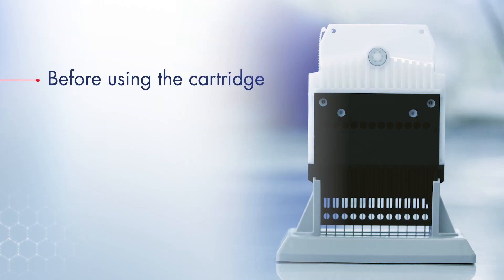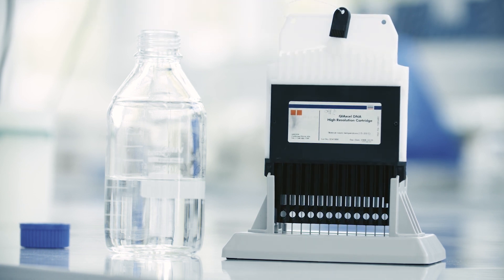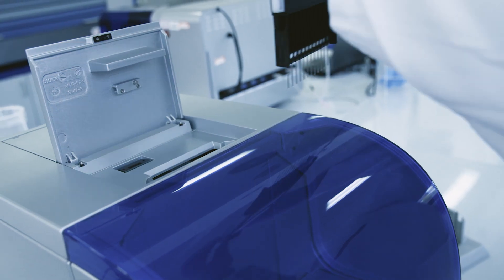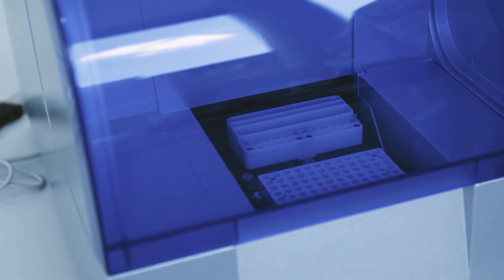Before using the cartridge, it is crucial to equilibrate it for at least 20 minutes to room temperature to ensure proper analyte separation. To equilibrate the cartridge, either place it in the cartridge stand with wash buffer overlaid with mineral oil, or directly place the cartridge into the QIAxcel Advanced. Ensure the buffer tray is loaded and wait.